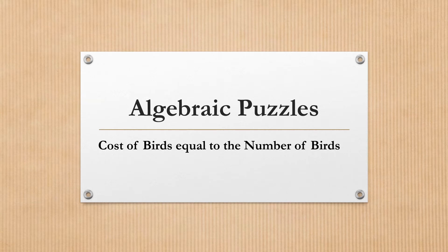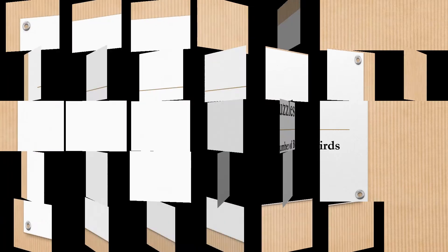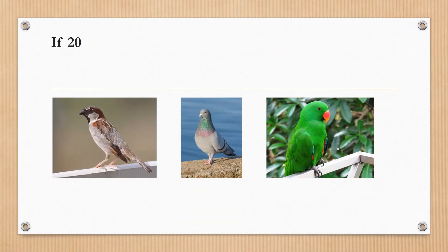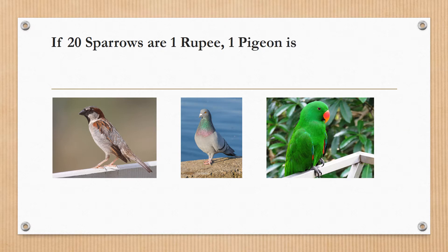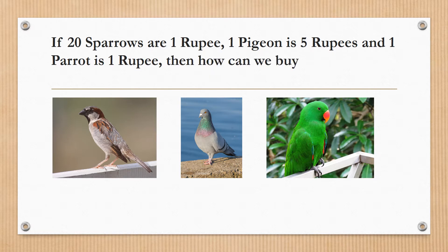Thank you for joining us to discuss the cost of the birds. If the cost of 20 sparrows is 1 rupee, 1 pigeon is 5 rupees, and the cost of 1 parrot is 1 rupee, then how can you buy 100 birds for 100 rupees?